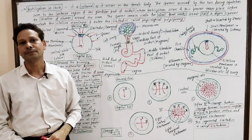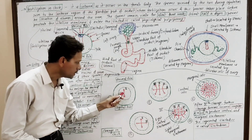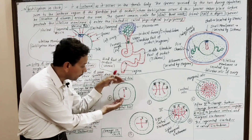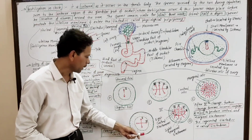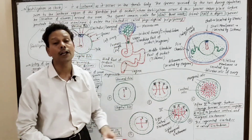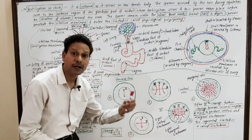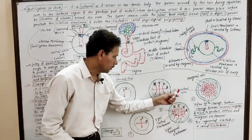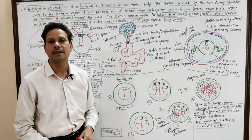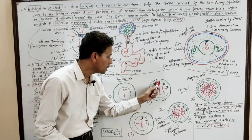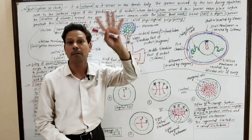The first cleavage — in case of chick, in case of hen — is meridional or vertical, and occurs in the center of the blastodisc, with the cleavage furrows moving outwards. The second cleavage is also meridional and vertical, but it occurs at right angle to the first. The third cleavage is almost parallel to the first cleavage, and occurs on both sides of the first cleavage. As a result, eight blastomeres — eight cells — are formed.